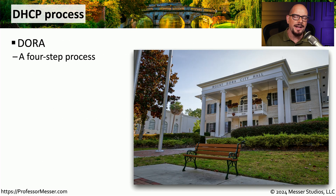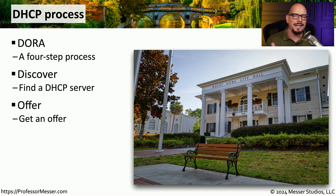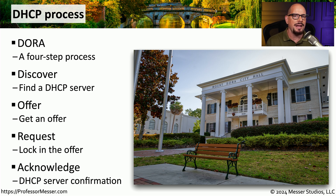The process for defining these IP addresses automatically follows four different steps that we're going to call DORA — D-O-R-A. The D stands for Discover, where there is a discovery process where you find the DHCP servers on your network. The next step is the Offer phase, where we get an offer from a DHCP server. The third step is the Request process, where we request one of the offered IP addresses. And then lastly, we have the Acknowledgement phase, where we tell the DHCP server that we have received that configuration and are using that particular IP address.